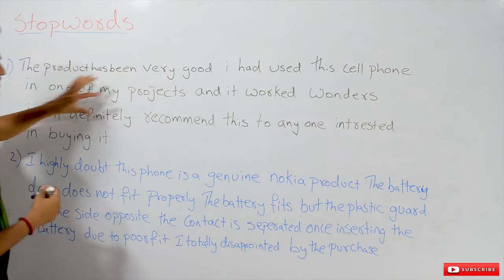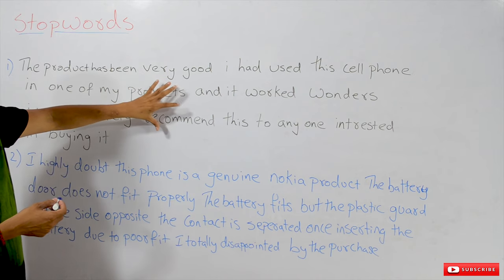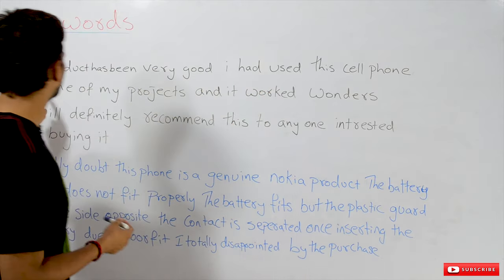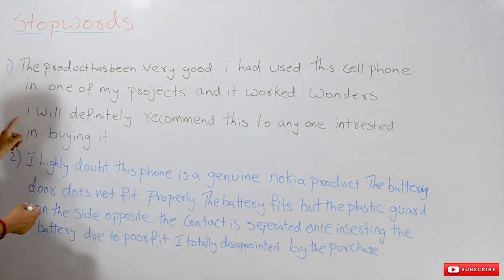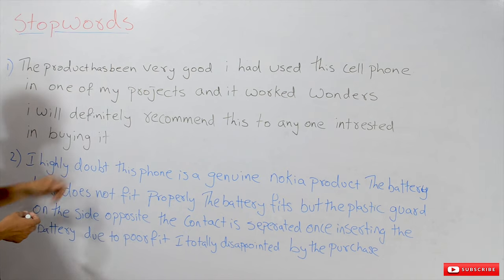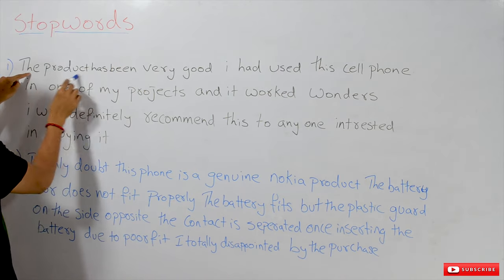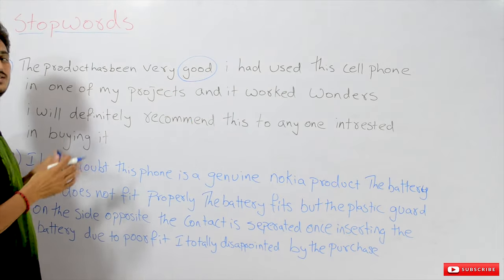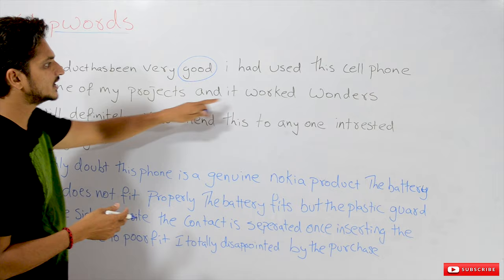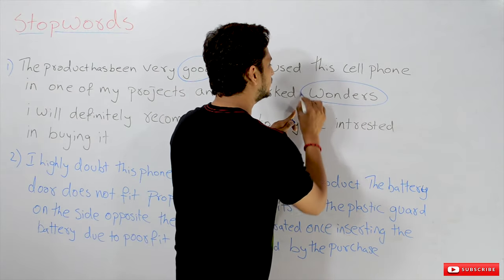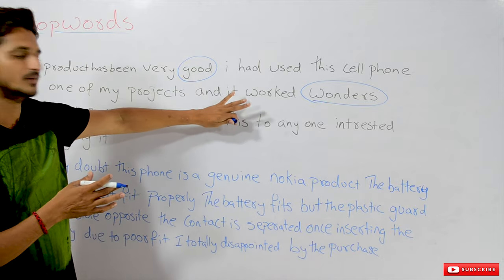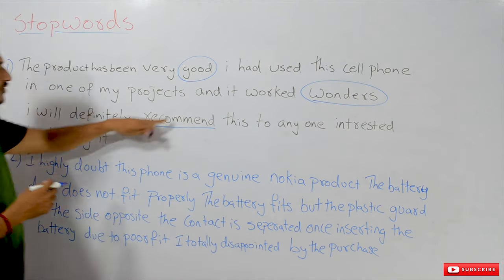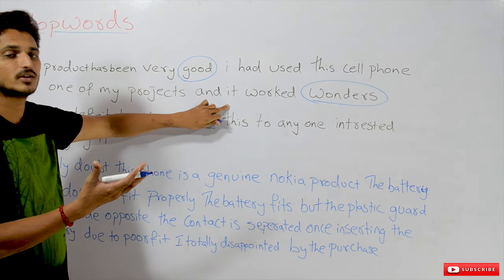Coming to this example, this is the positive feedback: 'The product has been very good and I had used this cell phone in one of my projects and it worked wonders. I will definitely recommend this to anyone interested in buying it.' The word 'good', 'worked wonders', and 'strongly recommend' are the words which tell us this is a positive feedback. These words are useful in analyzing whether a feedback is positive or negative.